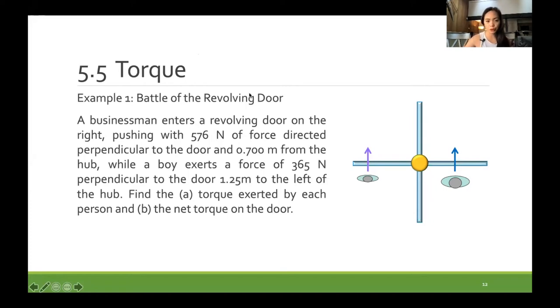We have here example number one for torque. A businessman enters a revolving door on the right, pushing with 576 newtons of force directed perpendicular to the door and 0.700 meters from the hub.